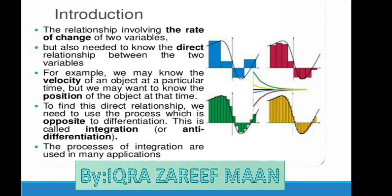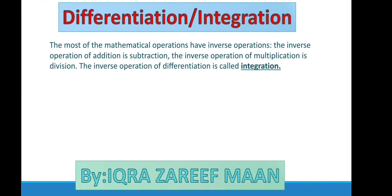First, we should know what integration is. The relationship involves the rate of change of two variables, but we also need to know the direct relationship between two variables. For example, velocity is the rate of change of displacement with respect to time. Using derivatives we can find this rate of change, but if we want to know the position of the object at that time, we need the process opposite to differentiation — this is called integration or anti-differentiation.